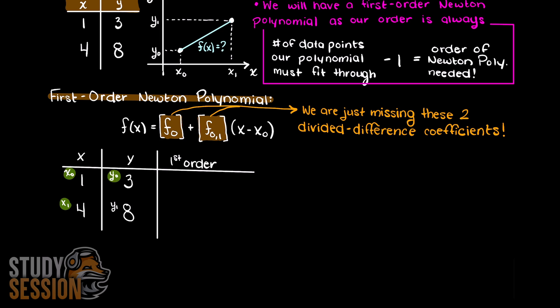Now, our first order divided difference is simply our difference in our y values divided by the difference in our x values. For higher orders this will get a bit more complicated, but we will talk about that in the coming example videos.